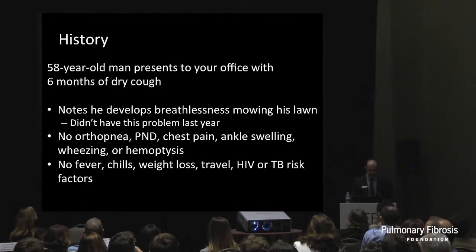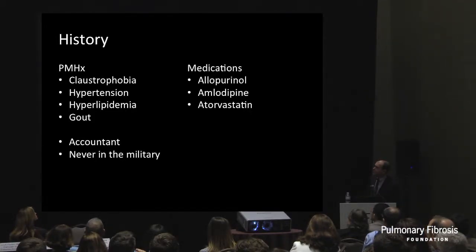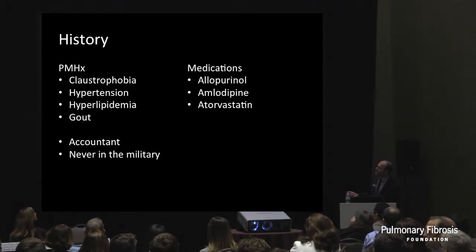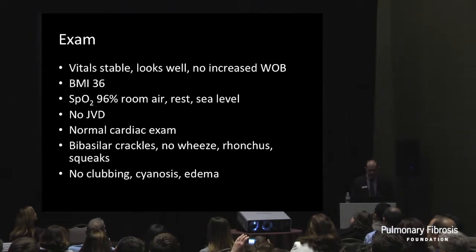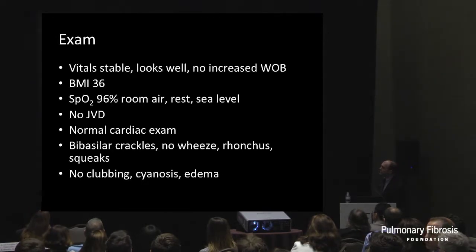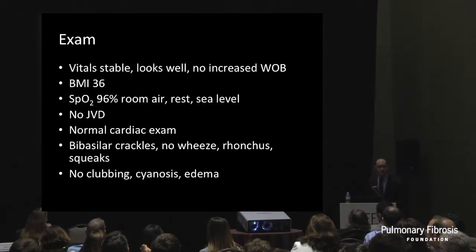Rounding out the history: this is a real case with a few things modified. He has a history of claustrophobia. Hypertension, hyperlipidemia, gout. He's an accountant, never in the military. He only takes medication starting with the letter A. Exam: no increased work of breathing, looks well, obese, 96% on room air at rest at sea level. No jugular venous distension, normal cardiac exam, and bibasilar crackles — the predominant finding. Everything else was pretty benign.